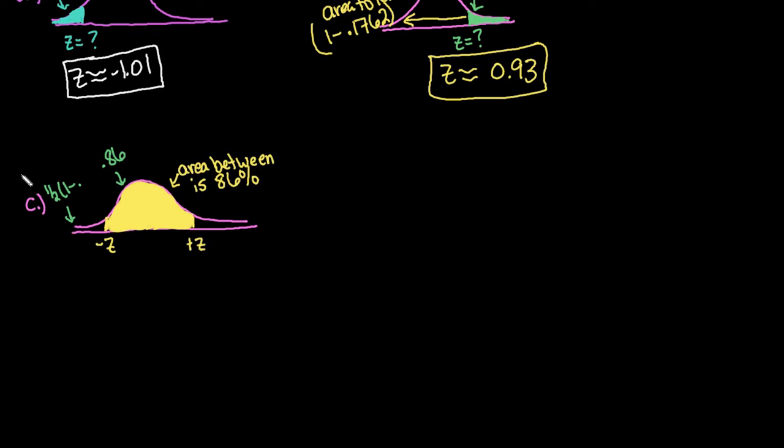Okay, so we would always do 1 half times 1 minus the area between. And so in this case, we would do 0.86.